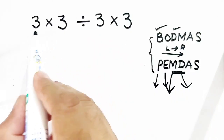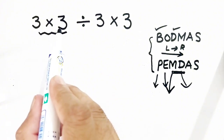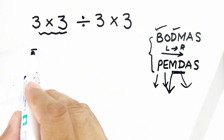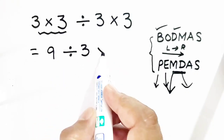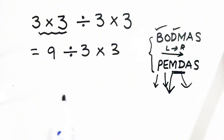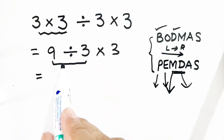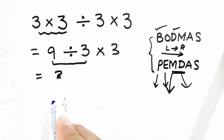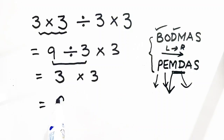At the left there is multiplication, so we will solve three multiplied by three first. Three multiplied by three will be equal to nine, and it is divided by three, multiplied by three. Again from left to right, we have nine divided by three — nine divided by three is equal to three — multiplied by three.